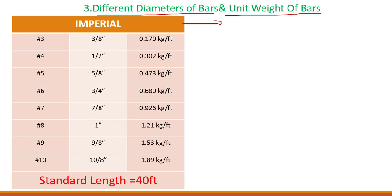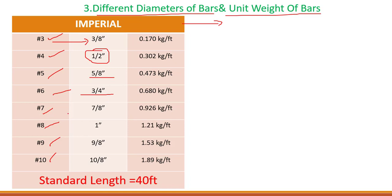We will look at both the FPS system (feet and inches) and the MKS system (millimeter, centimeter, and meters). In the imperial or FPS system we have bars like number 3, 4, 5, 6, 7, 8, 9, and 10. Number 3 means 3/8 inch. To convert bar numbers into inches, divide by 8. So number 4 means 1/2 inch (half inch), number 5 is 5/8 inch, number 6 is 3/4, number 7 is 7/8, and number 8 is 1 inch.